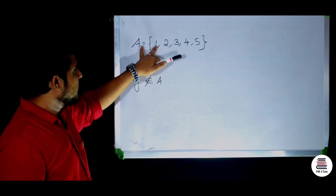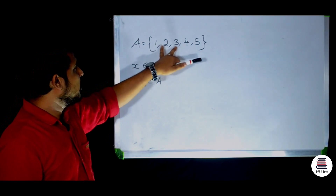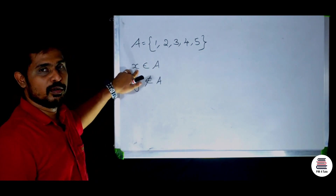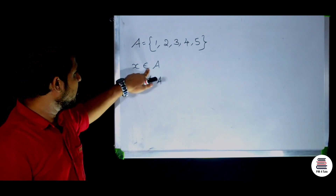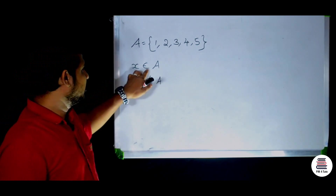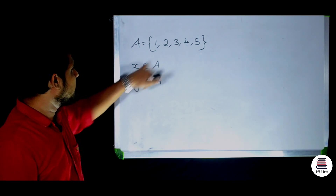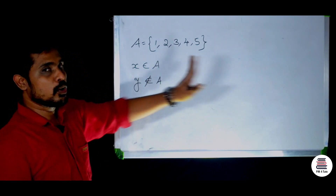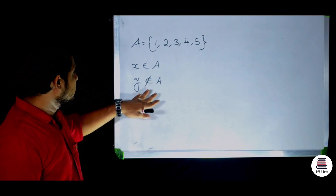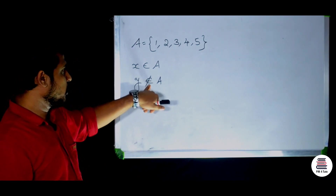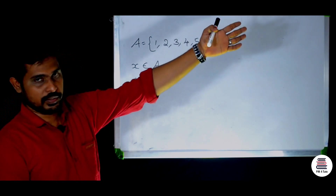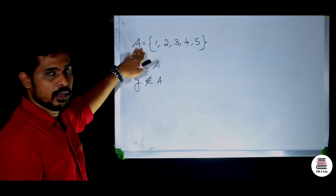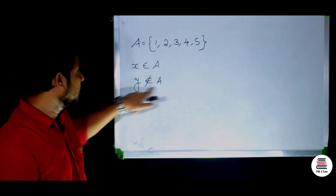Here are the basic variables: 2, 3, and 4. We can use the variable. x is an element of A. x is an element of A, where x has the values 1, 2, 3, 4, 5 — that is the element of A, belongs to A. y is not an element of A.